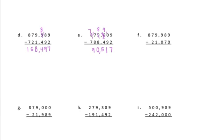F: 9 minus 0 is 9. 8 minus 7 is 1. 9 minus 0 is 9. 9 minus 1 is 8. 7 minus 2 is 5. And 8 minus nothing is 0. Answer: 858,919.